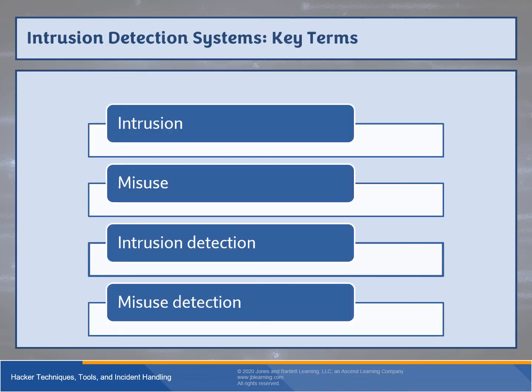Intrusion means unauthorized user access of a system, which can happen in any number of ways. An IDS is essentially a ramped-up packet sniffer — it identifies whether traffic comes from an approved or non-approved source. Misuse is internal, either malicious or benign — it's the improper use of resources within an organization. Intrusion is external; misuse is internal. Detection is the technique of uncovering successful or attempted misuse or intrusion.